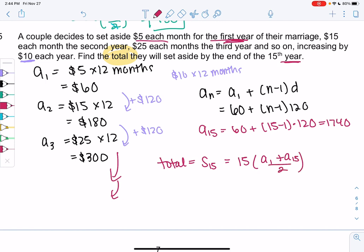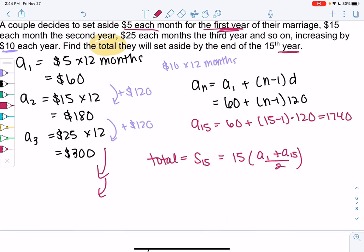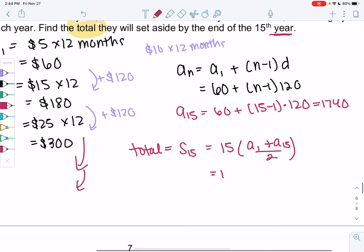And that will give me the total over all 15 years. So we get 15 times 60 plus 1740 over 2. I think that becomes 1,800 over 2.